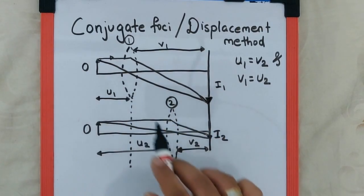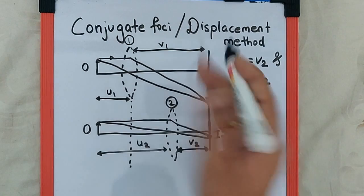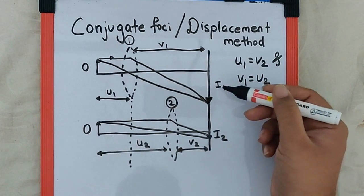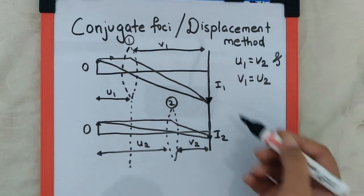So these two points are called conjugate foci, or this process of displacing the lens to get two images, one magnified and the other diminished, is called the displacement method.